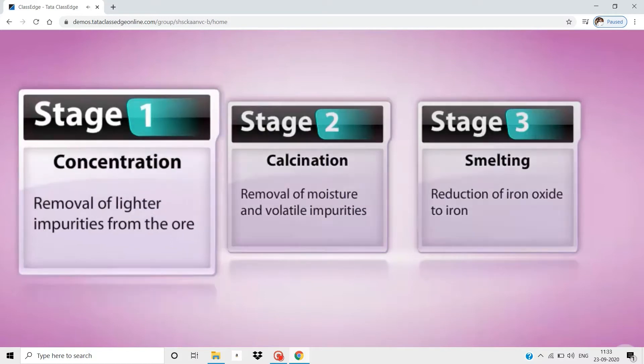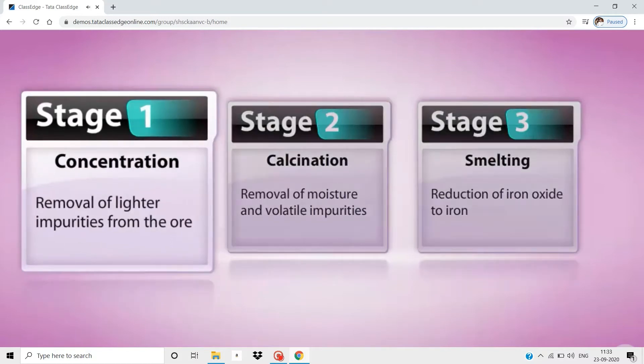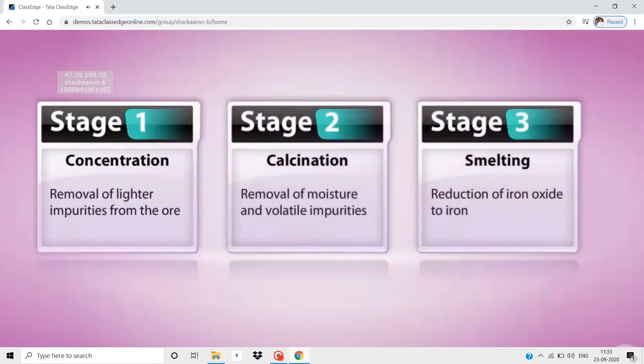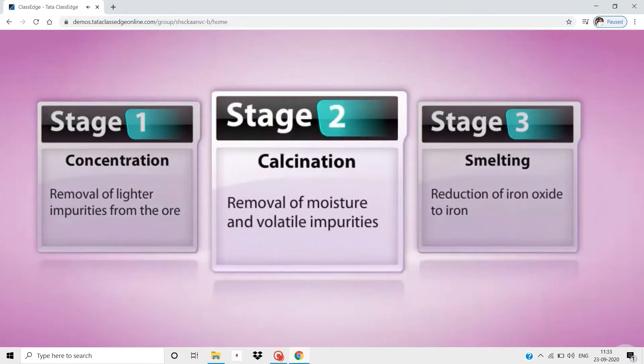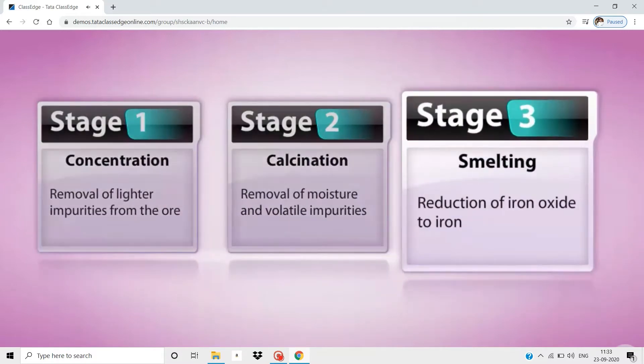In the concentration of ore stage, lighter impurities are removed from the ore. In the calcination stage, moisture and volatile impurities are removed from the concentrated ore. In the smelting stage, iron ore is reduced to iron.